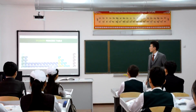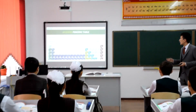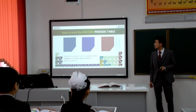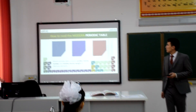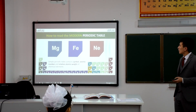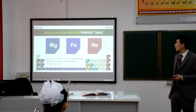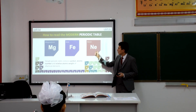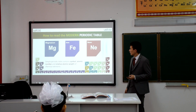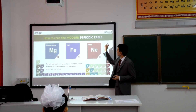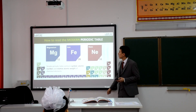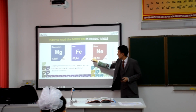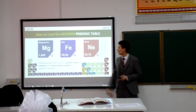A simple periodic table contains the symbol, atomic number, and relative atomic weight of chemical elements. How to read the modern periodic table? A periodic table entry contains the symbol, name of element, atomic number, and relative atomic weight of chemical elements.